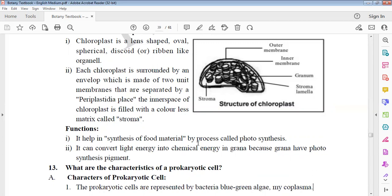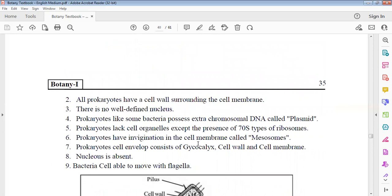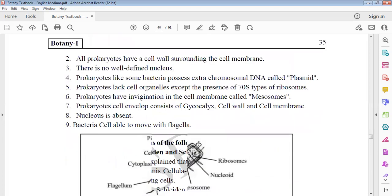Characteristics of prokaryotes. Prokaryotes are bacteria and blue-green algae. Mycoplasma is bacteria, there are other prokaryotes. There is no cell wall, there is cell membrane. There is no well-defined nucleus. There are extra chromosomes - the DNA that is plasmid. In prokaryotes, cell membrane-bounded cell organelles are absent. There are 70S types of ribosomes. In prokaryotes, there are invaginations of cell membrane, that is why it is mesosome. In prokaryotic cell envelope, there is glycocalyx - glycocalyx is cell wall, cell membrane.